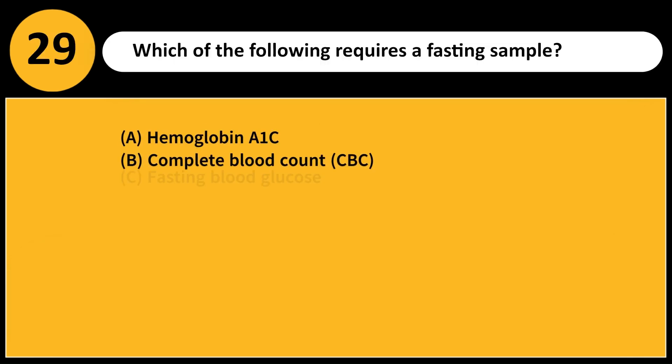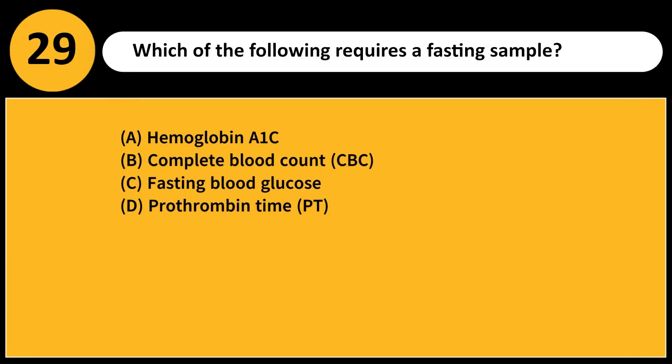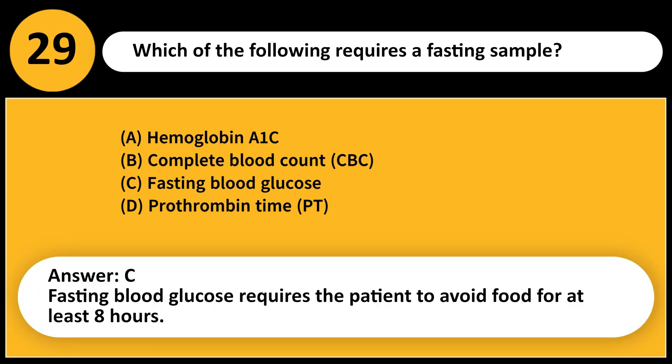Which of the following requires a fasting sample? A. Hemoglobin A1c. B. Complete blood count (CBC). C. Fasting blood glucose. D. Prothrombin time (PT). Answer: C. Fasting blood glucose requires the patient to avoid food for at least 8 hours.